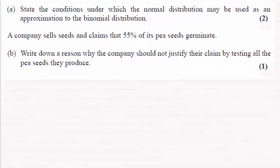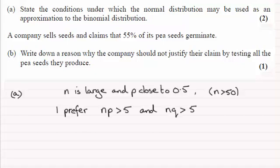For this question in Part A, we're asked to state the conditions under which the normal distribution may be used as an approximation to the binomial distribution. If you look at the mark scheme, the answer they give is that n must be large and p is close to 0.5.